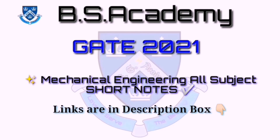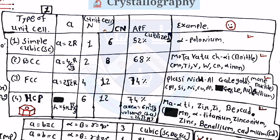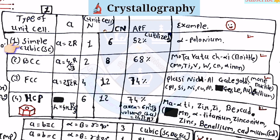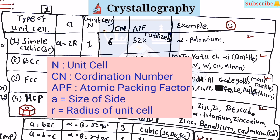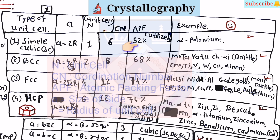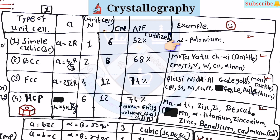The first concept is crystallography. Here there is one table which is most important for the examination. For the simple cubic: A is equal to 2R, unit cell count is equal to 1, coordination number (CN) is equal to 6, and APF is equal to 52%. The example is alpha polonium.